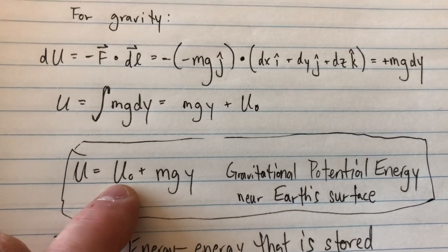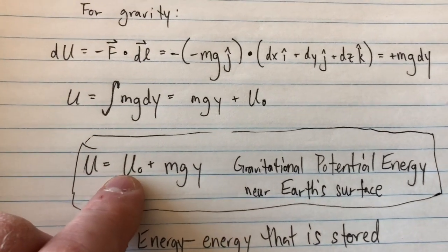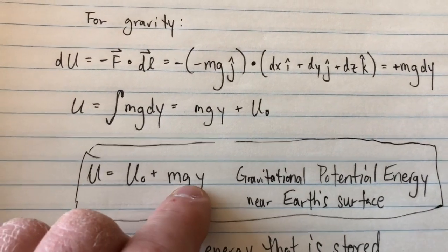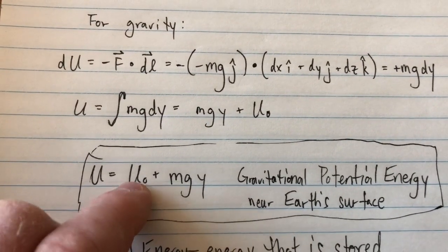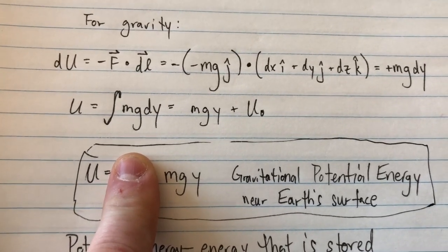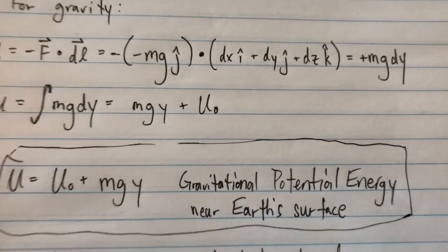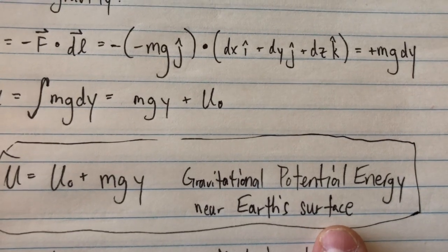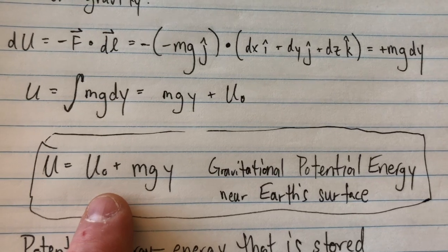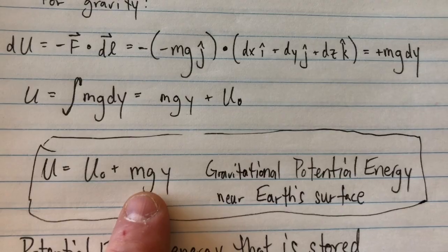If you call that constant zero — which is what we do by setting the ground as the reference with zero potential energy — then the starting point doesn't really matter because with potential energy all you care about is the distance from that starting point. This gives the familiar equation U = mgy, or U = mgh: the formula for gravitational potential energy near Earth's surface. This is specifically for near Earth's surface, not just potential energy anywhere.